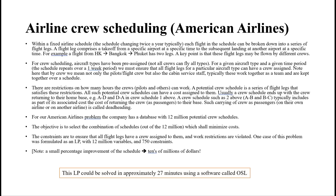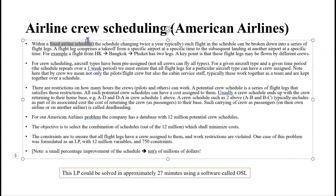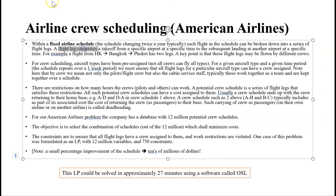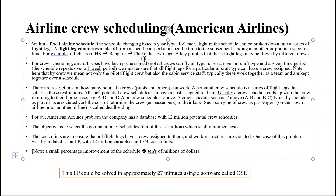It's an airline scheduling issue with American Airlines. A fixed airline schedule is defined as each flight in the schedule being a series of legs. A flight leg comprises a specific takeoff from an airport to a landing at another airport. For example, Hong Kong to Bangkok to Phuket is going to have two legs, because there are two takeoffs and landings — Hong Kong to Bangkok, and then Bangkok to Phuket. A key point is that these flight legs may be flown by different crews.